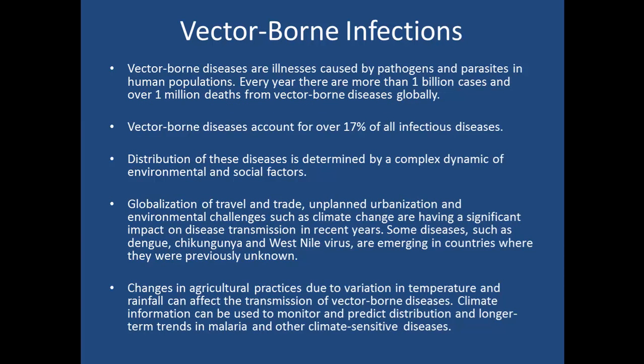Today, vector-borne diseases are caused by parasites and pathogens, with about a billion cases every year leading to one million deaths annually throughout the world. Vector-borne diseases account for about 17% of all infectious diseases, and their distribution is determined by complex dynamics of environmental and social factors. Basically, the environment has a lot to do with temperatures, the amount of rainfall, where mosquitoes live.